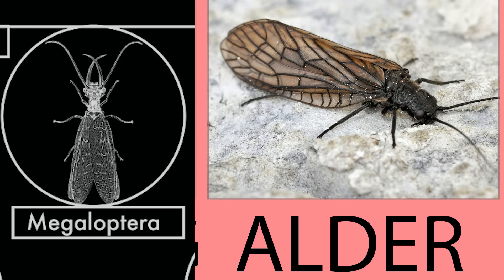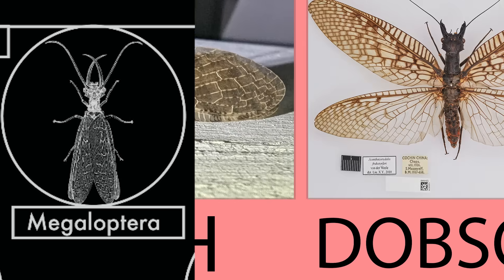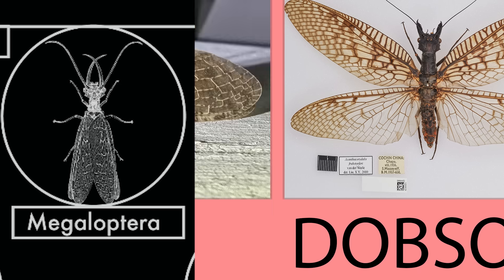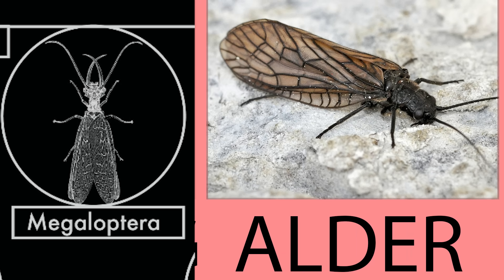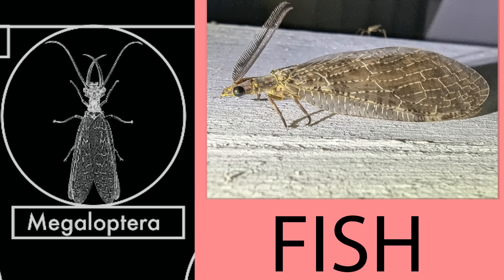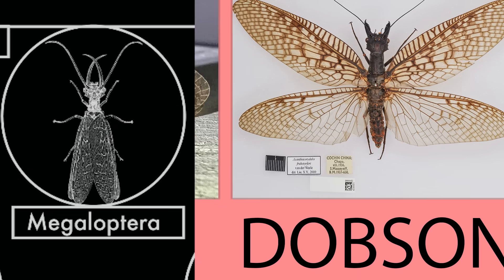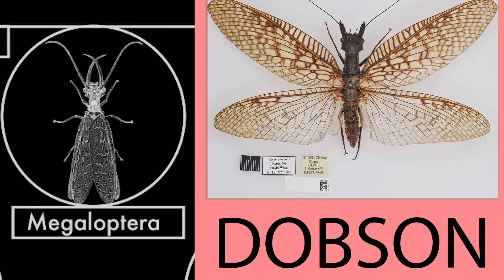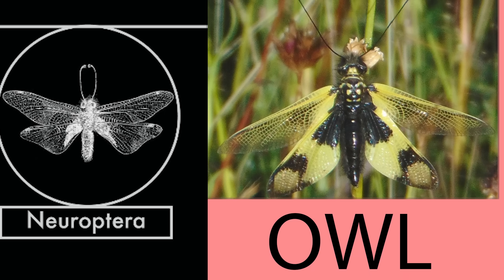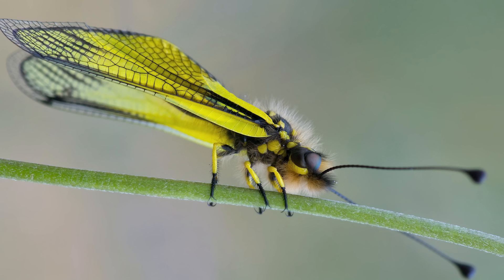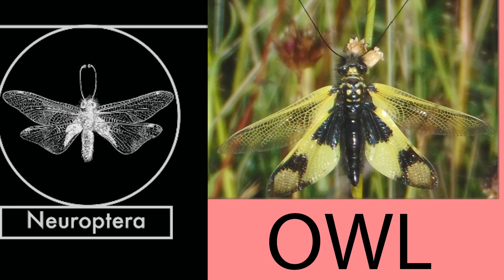From the order Megaloptera are the alder flies, fish flies, and dobson flies, which are all closely related. Alder flies are named for their frequent association with alder trees near aquatic habitats. Fish flies are named for their abundance near water and fish habitats — not because they feed on fish, but perhaps because fish feed on them. Dobson flies are named after the British naturalist Thomas Dobson, one of the few insect groups named after a person. From the order Neuroptera come the owl flies, named for their large eyes and crepuscular habits — they emerge during twilight, evoking owls.